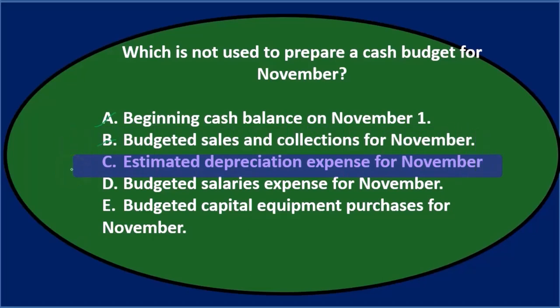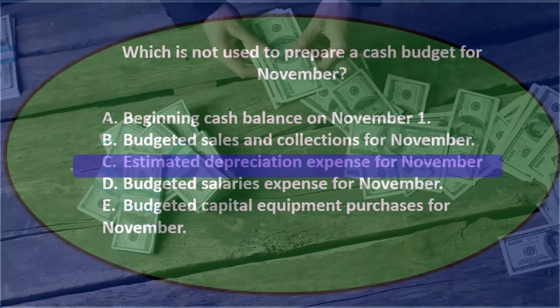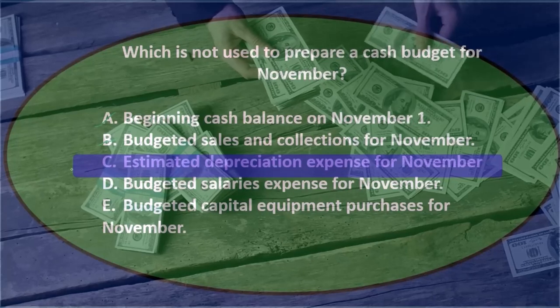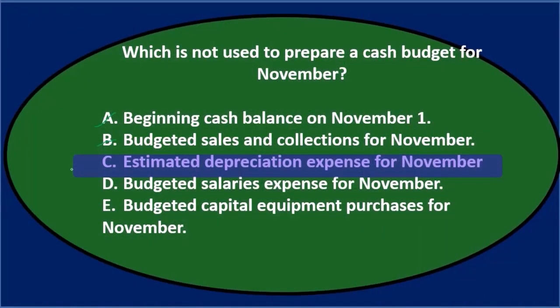C says estimated depreciation expense for November. You might say that's normal, but depreciation is not a cash item. This is a question that tests accrual items versus cash items. We're on the cash budget — depreciation expense has no cash involved. We debit depreciation expense, credit accumulated depreciation; the cash was spent in the past when we purchased the equipment. Recording depreciation involves no cash, so it does not belong on the cash budget. Depreciation is a common trap in multiple-choice questions about cash budgets.